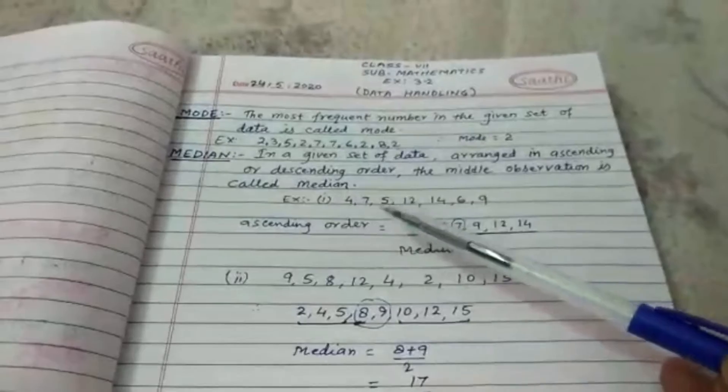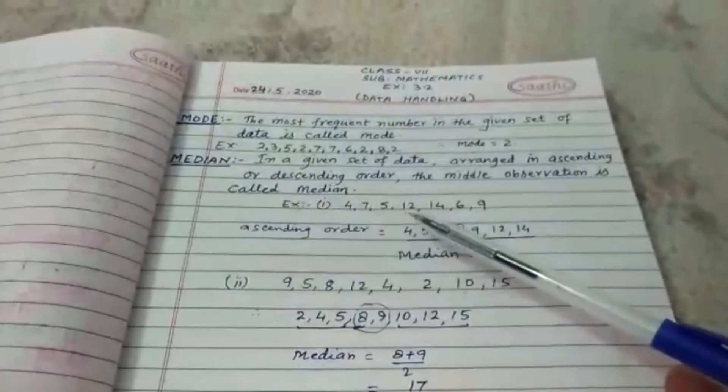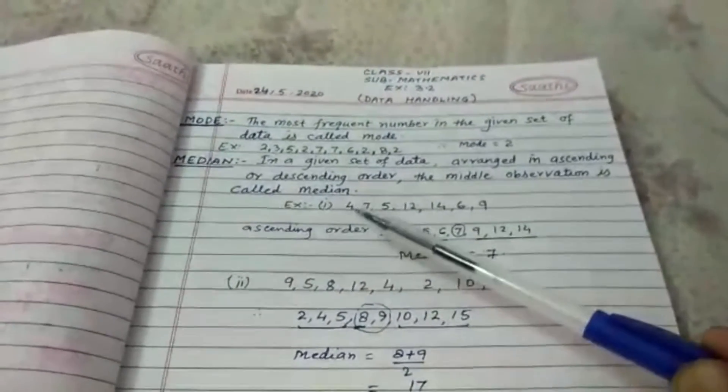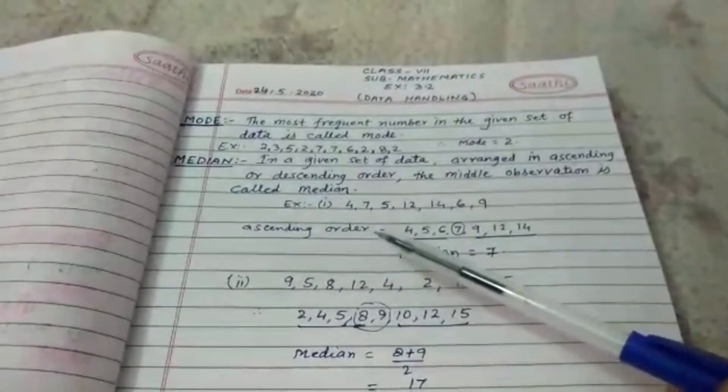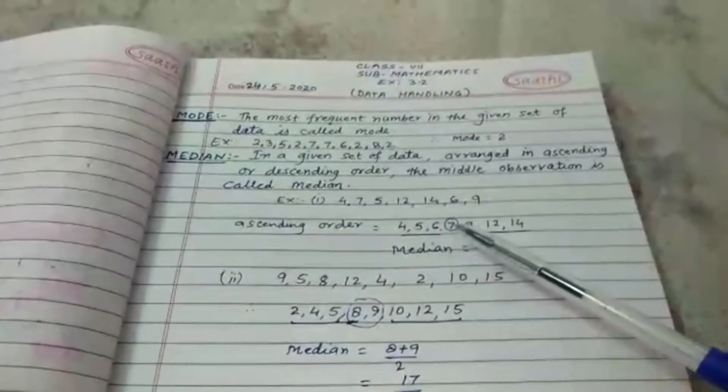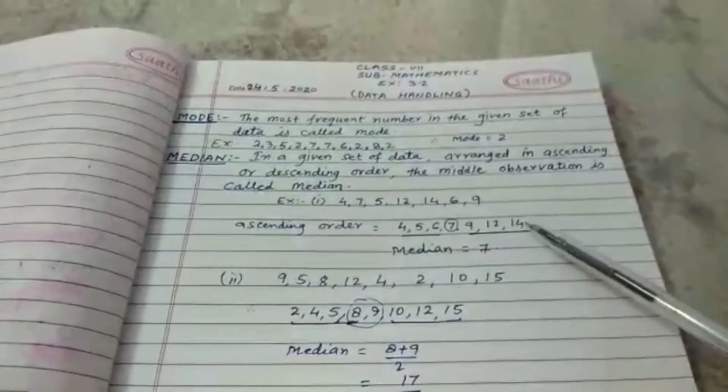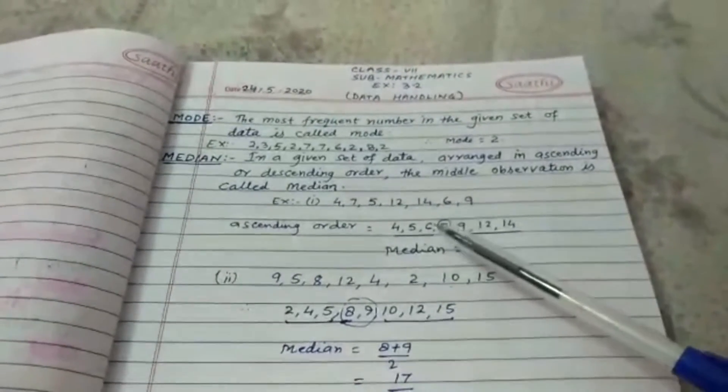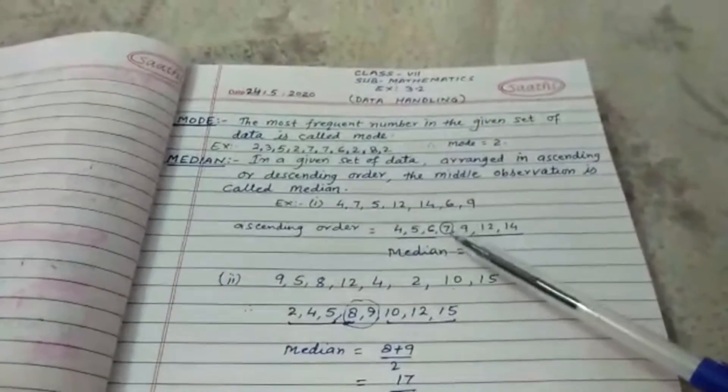Now example: 4, 7, 5, 12, 14, 6, and 9. We have to arrange this data in ascending order: 4, 5, 6, 7, 9, 12, and 14. Now you have to choose the middle observation. The middle observation is 7.